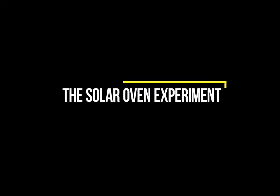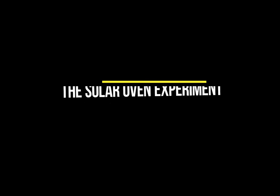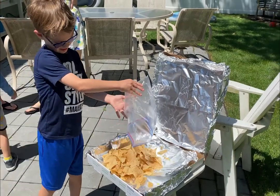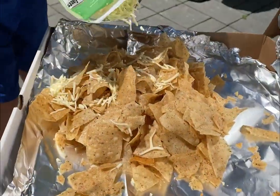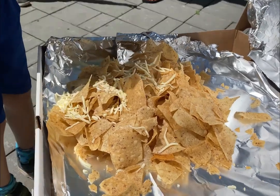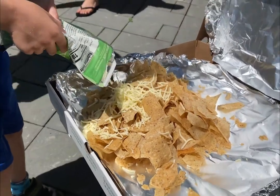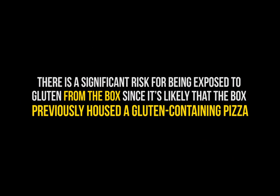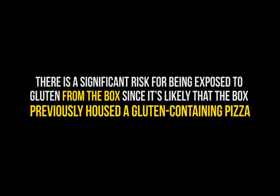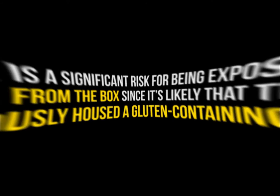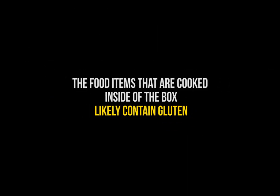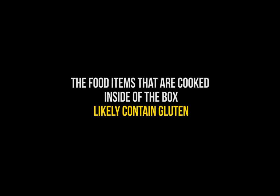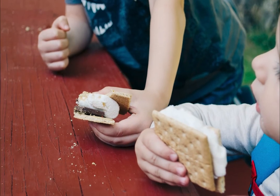Another fun experiment is the Solar Oven Experiment, a project that lets kids learn about the power of sun rays and how heat from the sun can cook food. Most instructions recommend using a used pizza box and cooking items like a grilled cheese sandwich or s'mores. There are multiple areas of concern for a child with celiac disease: there is a significant risk of gluten exposure from the box since it likely previously housed gluten-containing pizza, and the food items cooked inside will also likely contain gluten, such as s'mores or grilled cheese sandwiches.